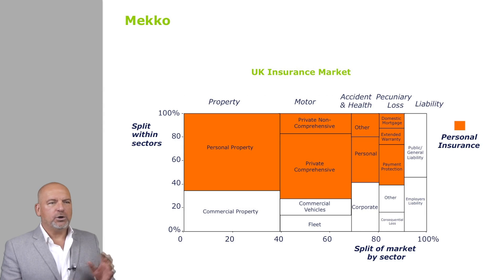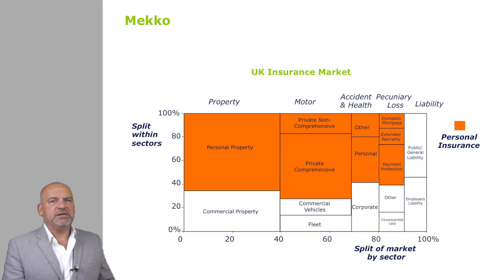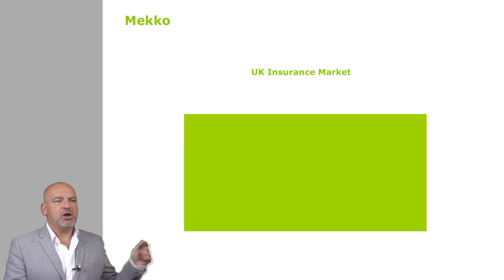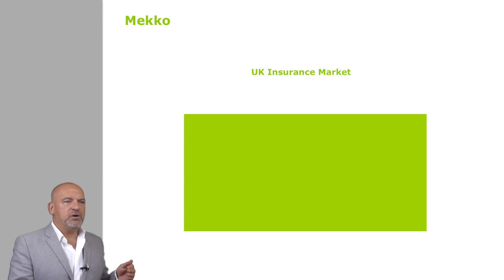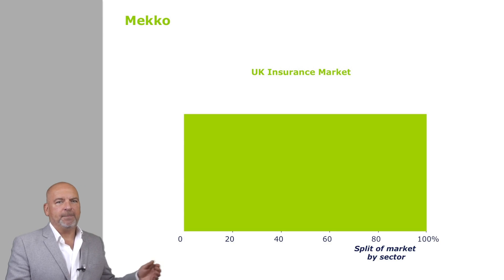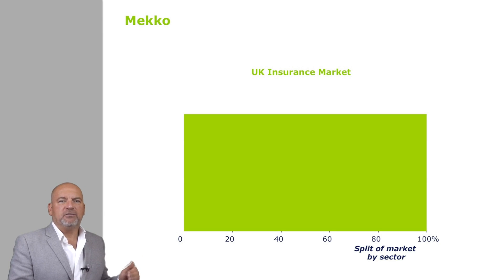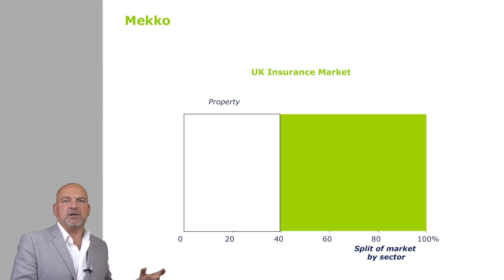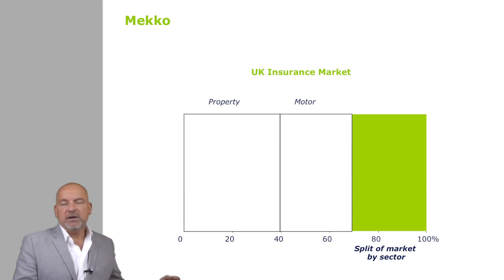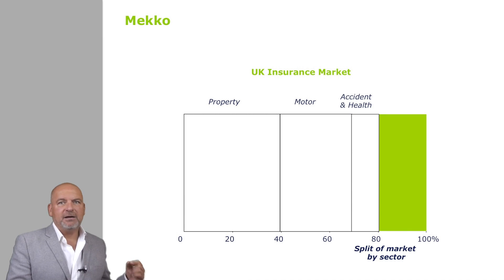Let me explain this one. What you have here is the British insurance market. The total size of the rectangle is the total size of the market. We have three cuts of the data. The first cut is horizontal — we cut this rectangle into five segments, and the width of each segment is proportional to the size of the segment. For example, property insurance is about 40% of the total insurance market, then motor insurance is another 30%, then accident and health is another 10%, etc.